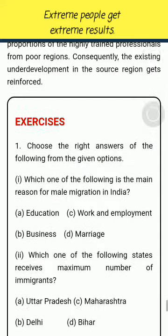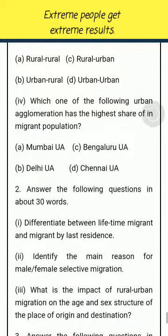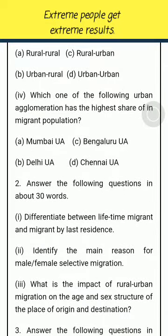Exercises. Choose the right answers from the given options. Which one of the following is the main reason for male migration in India? (a) Education (b) Work and Employment (c) Business (d) Marriage. Which one of the following states receives the maximum number of immigrants? (a) Uttar Pradesh (b) Maharashtra (c) Delhi (d) Bihar. Which one of the following streams is dominated by male migrants in India? (a) Rural-Rural (b) Rural-Urban (c) Urban-Rural (d) Urban-Urban. Which one of the following urban agglomerations has the highest share of in-migrant population? (a) Mumbai UA (b) Bengaluru UA (c) Delhi UA (d) Chennai UA.